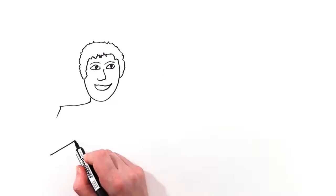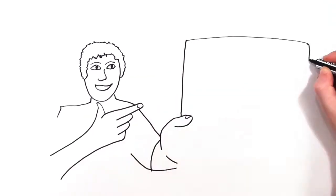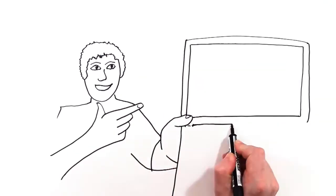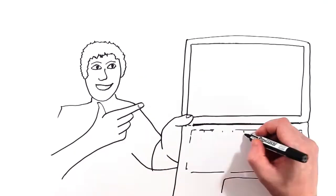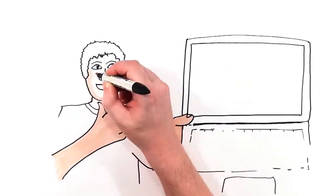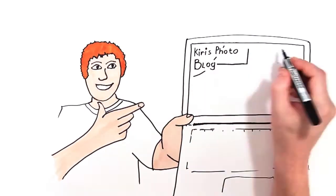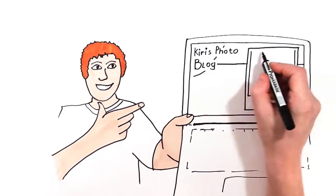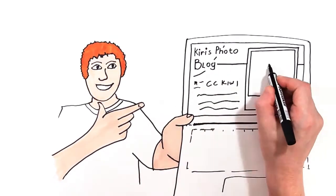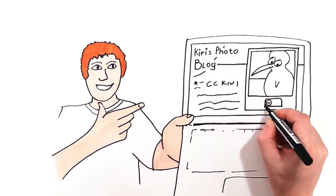Zach here downloads a photo called CC Kiwi that he wants to use in his science project. He can do this without asking Kiri, the photographer, first because she's already given permission with a Creative Commons license.